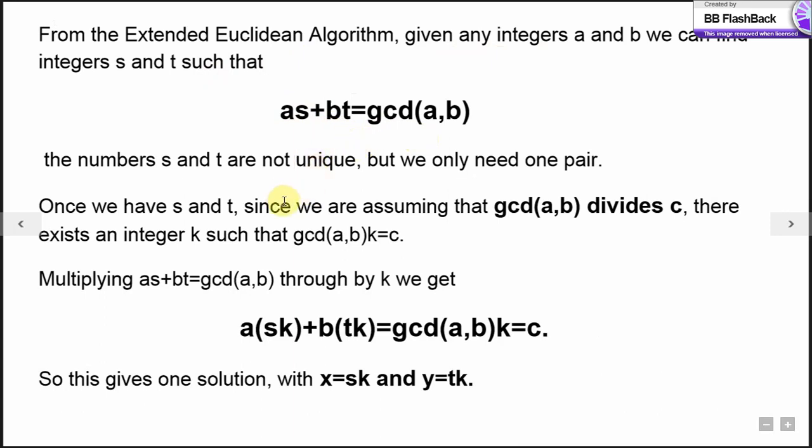Once we have s and t, and since we're assuming that gcd of a, b divides c, there must be an integer k such that gcd of a, b into k gives me c. Multiplying this equation all through by k, we get a into sk plus b into tk equals gcd of a, b into k, which is c. So one solution for the equation we have is x equal to sk and y equal to tk, where k is c divided by the gcd of a, b.